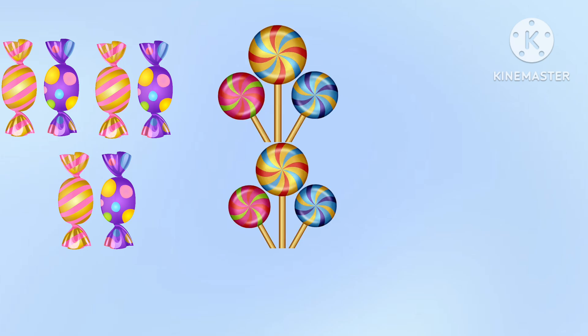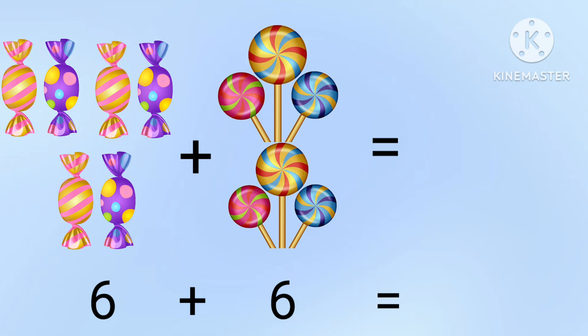So 6 plus 5 equal to 11. Here there are 6 candies and 6 more candies are added. So 6 plus 6 equal to?